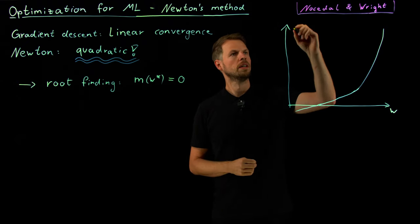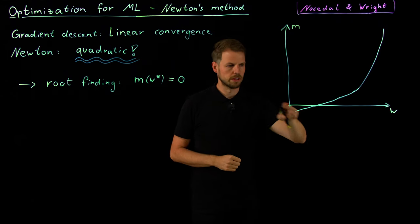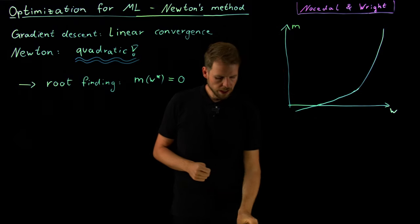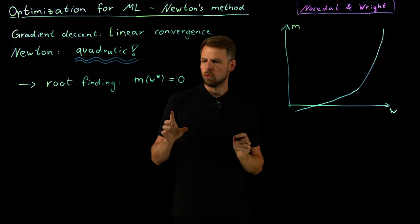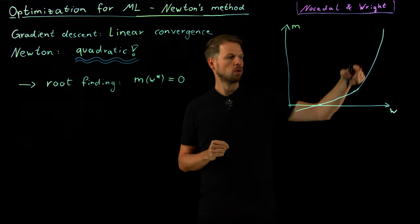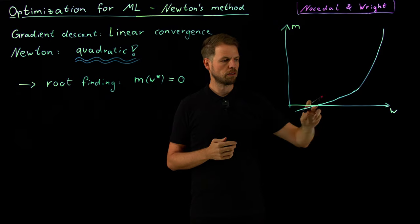So if we look at the sketch now, this would be our function M, for which we are trying to find the root. And so what the idea behind this is, is really to not go using gradients, but use a secant approximation for this root.